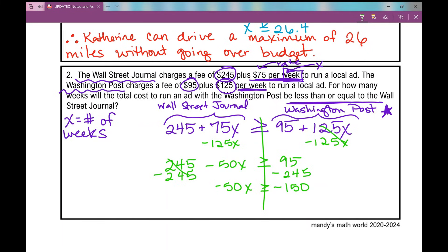And at this point, I need to divide both sides by negative 50. When I divide by a negative, what do I do to my sign? I flip it, and I get positive 3.